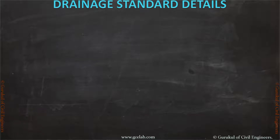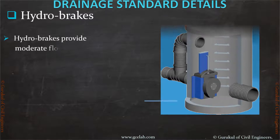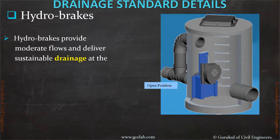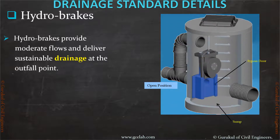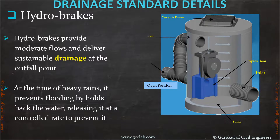Next are hydro brakes. Hydro brakes provide moderate flows and deliver sustainable drainage at the outfall point. At the time of heavy rains, they prevent flooding by holding back the water and releasing it at a controlled rate, to prevent it spilling over the river banks.